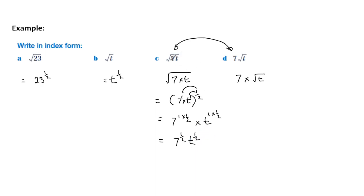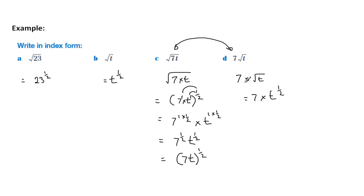It's very important to notice that when we find the square root of 7t, it's both the square root of 7 and the square root of t. We can simply write it as the whole expression to the power of a half, meaning both the 7 and the t are to the power of a half. Whereas in the other question, it is only the t that is to the power of a half — not the 7, because it doesn't come inside the square root sign. So it's a very important thing to notice the difference.